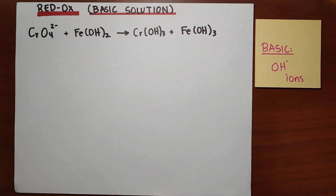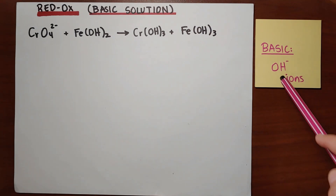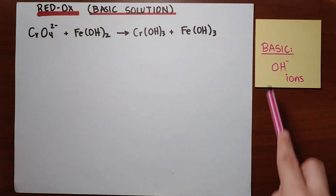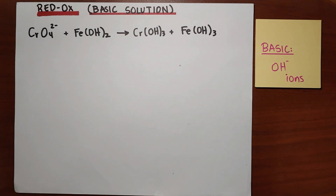Good morning. We will continue with the topic of redox reactions, but this time we're going to do it in basic solution. Now, what does that mean for this process? We're going to do the same that we have been doing for acidic solution, but in the end we're going to add OH⁻ ions, or hydroxide ions, because OH⁻ makes a solution basic. So let's begin.